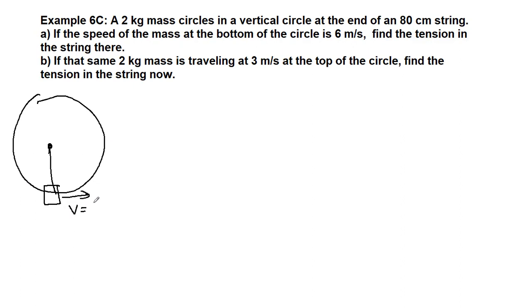If we're at the bottom of the circle here, we're moving tangent to the circle and our speed is six meters per second in this example. So for part a we have that the mass is two kilograms, the radius of the circle is the length of the string, just like example b. 80 centimeters is equal to 0.8 meters and we're told that the velocity is 6 meters per second.